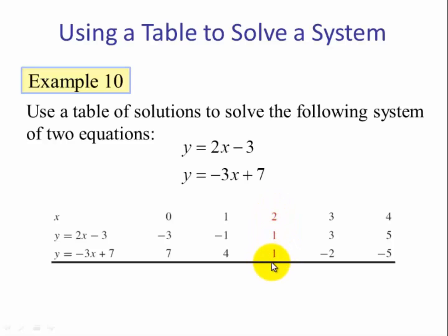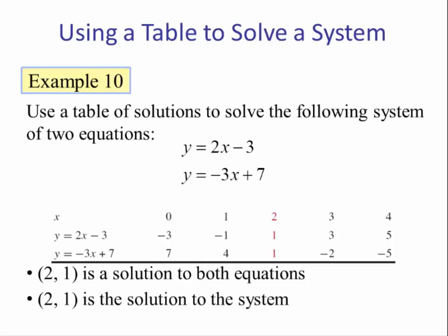The y values are the same, 1. So that means 2, 1 is a solution to both equations because that point is on both graphs. That point, when x is 2 and y is 1, will make both equations true. So 2, 1 is a solution to the system.